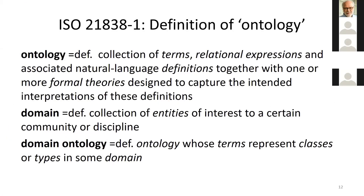ISO 21838 specifies the requirements of being a top level ontology. An ontology is defined here as a collection of terms plus links connecting those terms plus definitions, all of which is formalized. The ontologies are made up of terms. Those terms represent classes or types — like animal or planet at the domain level, and like object, property, or process at the top level.